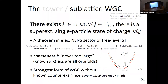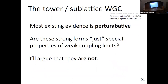The sub-lattice conjecture is the strongest form of the weak gravity conjecture without known counterexamples in d ≥ 5. Four dimensions is a little bit different because of RG effects. Most evidence up to recently for these conjectures is perturbative in nature — for example, it's a theorem in tree-level string theory and related to the emergence of weak coupling. The question is: is this just a property of weak coupling limits, not anything to do with non-perturbative physics? I'm going to argue that that's not true.